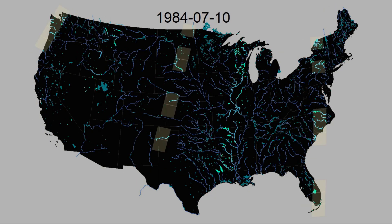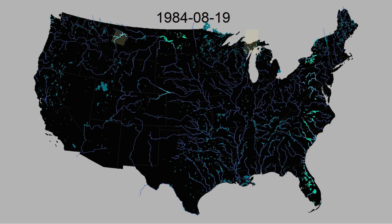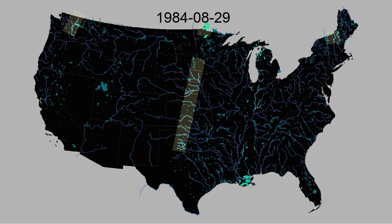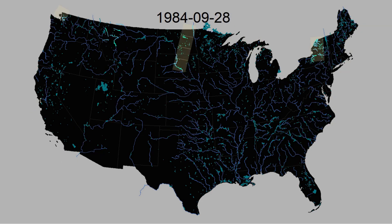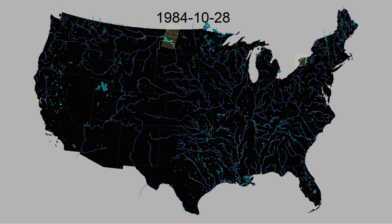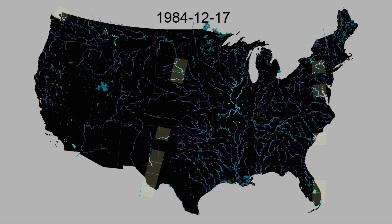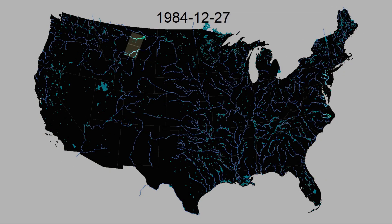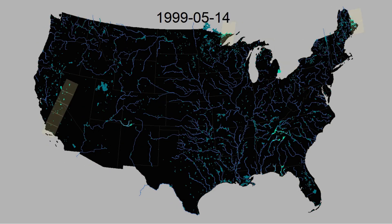Since the launch of Landsat 5 in 1984, we have had satellites in the air that take high spatial resolution images of the Earth every 16 days. Here you can see these images being taken by Landsat 5 as it orbits the United States, taking pictures of rivers and lakes along the way. This video shows the path when an image has less than 50% cloud cover. So when a Landsat path has blank spaces, that is because there were too many clouds for useful data collection.